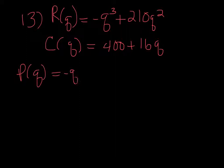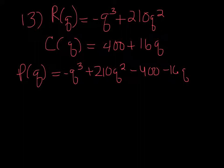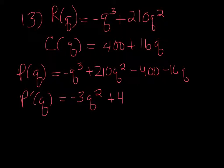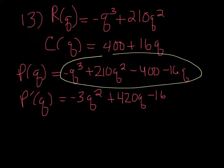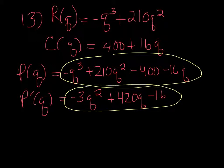So it's going to be -q³ + 210q² - 400 - 16q. We don't have any like terms so that's fine. So to get the marginal we're just going to take the derivative and get -3q² + 420q - 16. So those are your two answers for this one. You need the actual profit function and then also the marginal profit function.